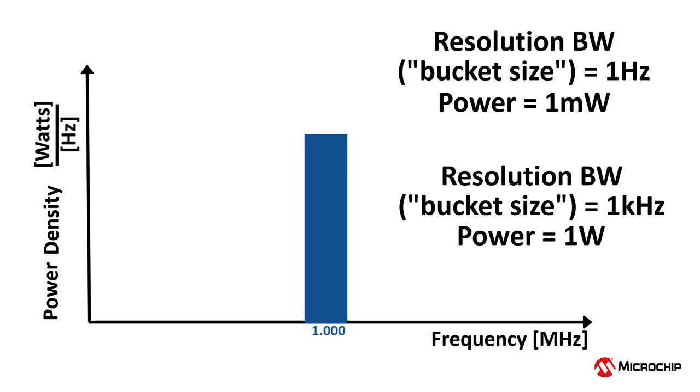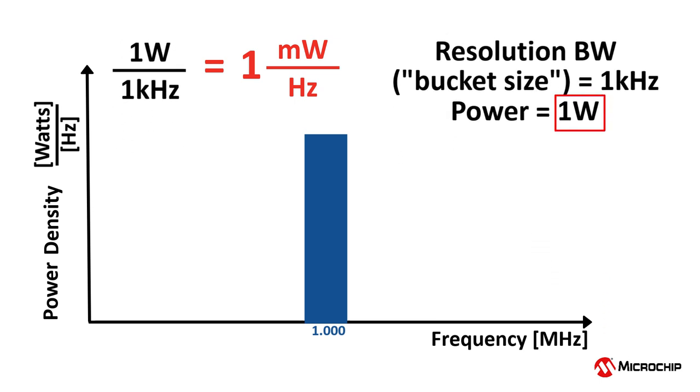Now, if I use power density instead of simply power, the results are the same independent of my choice of resolution bandwidth bucket size. The example 1 MHz clock I just discussed with power of 1 mW per 1 Hz bucket size has a density of 1 mW per 1 Hz, which equals 1 mW per Hz. The other example clock I used with a bucket size had 1 Watt of power. And if we divide the power by the bucket size, we once again have a value of 1 W per 1 kHz, which equals 1 mW per Hz, the same as before. So here we see the convenience of using power spectral density instead of just power. The y-axis values are normalized and do not change depending on the resolution bandwidth bucket size.